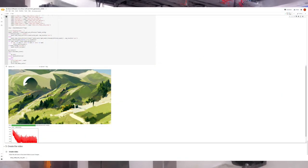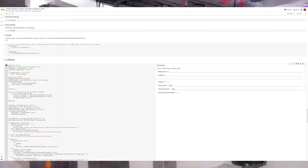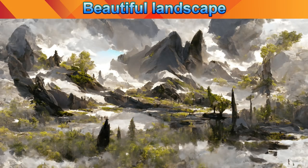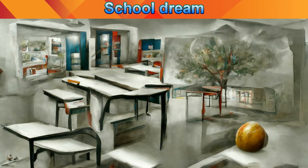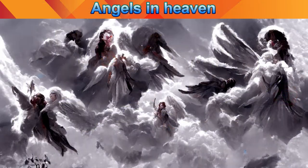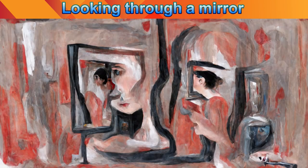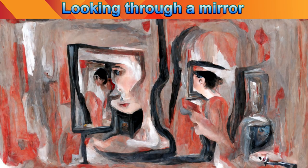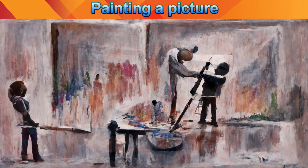Disco Diffusion is a free AI that runs on a Google server and generates images from a written description, creating works of art that are inspiring, dreamlike, unusual, amazing, strange, and everything in between.